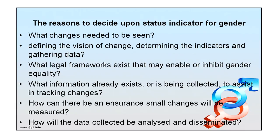There are several reasons to decide upon status indicators for gender. Key questions include: what changes need to be seen, defining the vision of change, determining the indicators and gathering data, what legal frameworks exist that may enable or inhibit gender equality, what information already exists or is being collected to track changes, how small changes will be measured, how data collected will be analyzed and disseminated, and where status indicators of gender are required — whether for research or surveys.